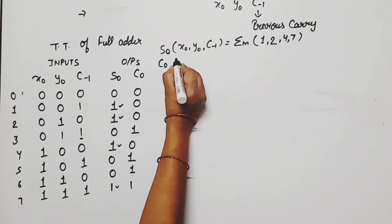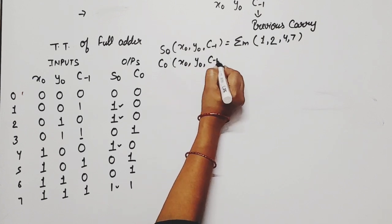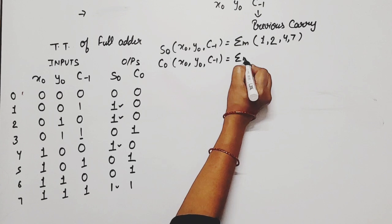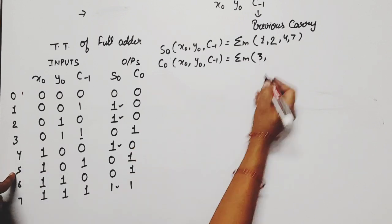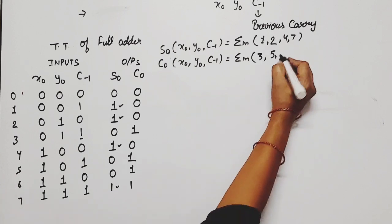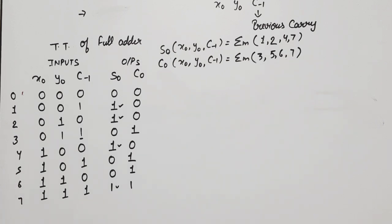Now carry out c0, function of x0, y0, c-1 is equal to summation m. Where is high? 3, then 5, then 6, then last is 7. So now we got the expression, truth table. Now we will implement it using PROM, ROM basically.